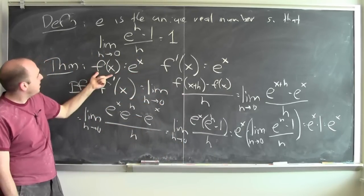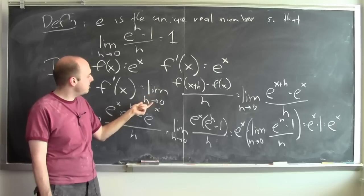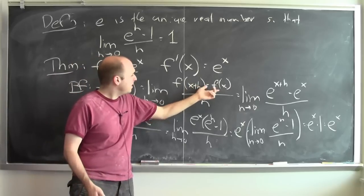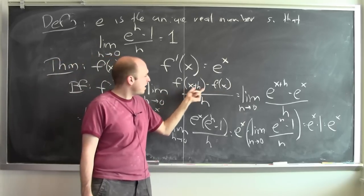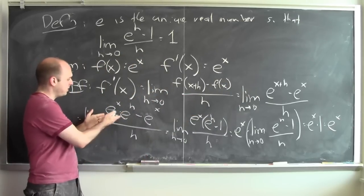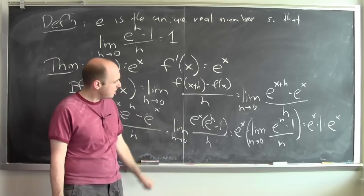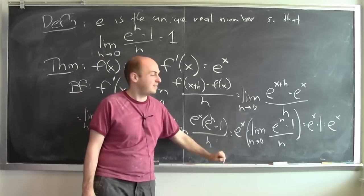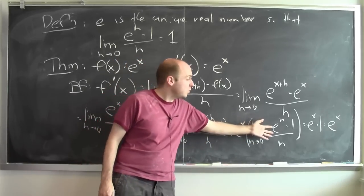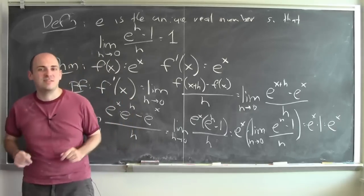I wanted to calculate the derivative of e to the x, so I set up this function f of x, and to calculate the derivative of that function I just used the definition of derivative — it's the limit as h goes to 0 of f of x plus h minus f of x over h. Then I plugged in what this function is: e to the x plus h minus e to the x over h. I calculated that limit by using the rules for exponentiation to replace e to the x plus h by e to the x times e to the h. Once I did that, I pulled out an e to the x as a constant, and used the limit that defines the number e — which equals 1. So that's an argument as to why the derivative of e to the x is itself — it's e to the x.